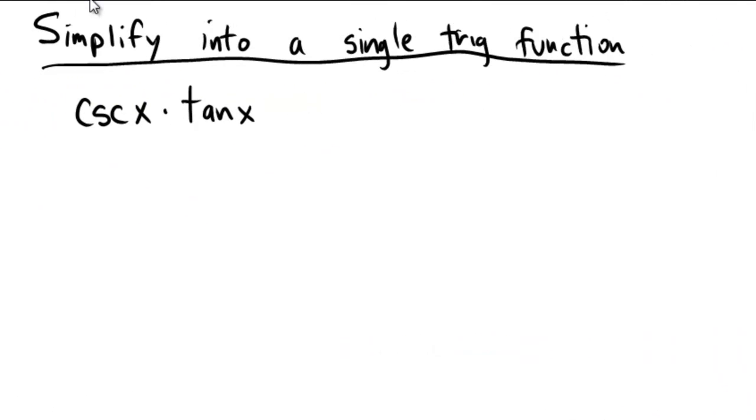This problem is asking us to simplify a trigonometric expression into a single trig function. So we're going to be using our identities to do this. If you're in my classes, I'm going to be using the abbreviations we use in class so that way we're preparing for our trig identities unit which is rapidly approaching.